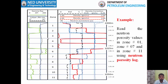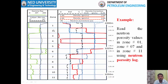In the coming slides we will see an example. You have been asked to read the neutron porosity values in zone number 1, zone number 7, and zone number 11 using the neutron porosity log. The log section has been given to you with different zones already made for your easiness. Remember that many times you will not be provided with zones and will need to make zones by yourself. Zone number 1 to 11 and all log responses against each zone are given.